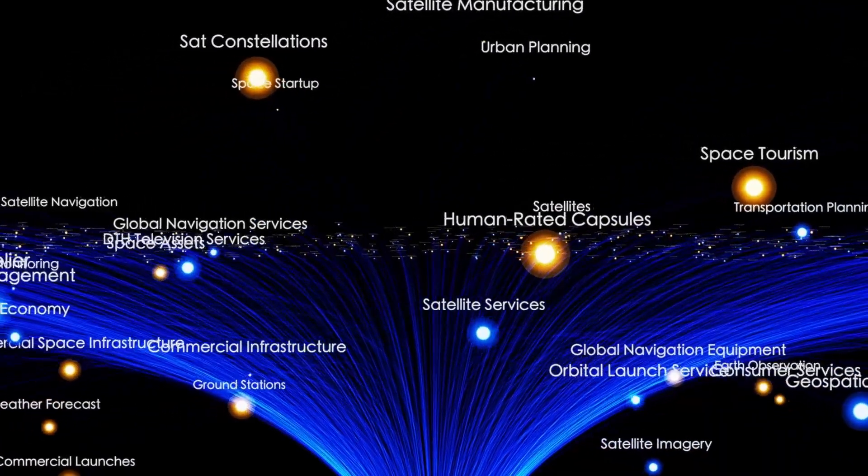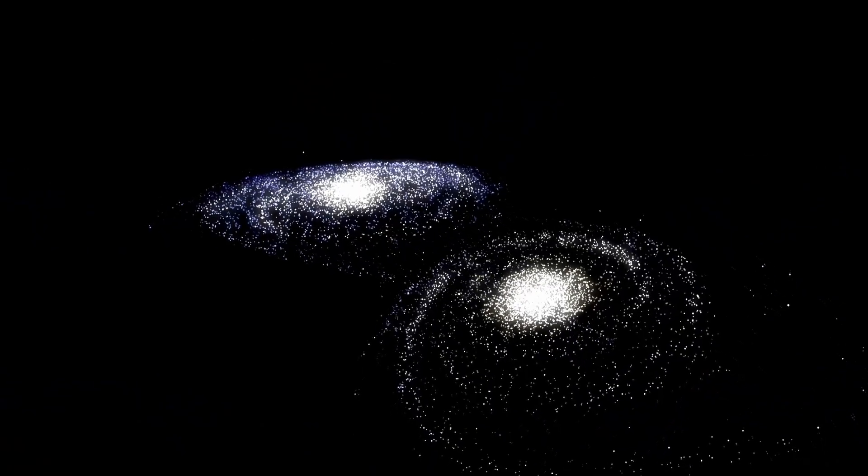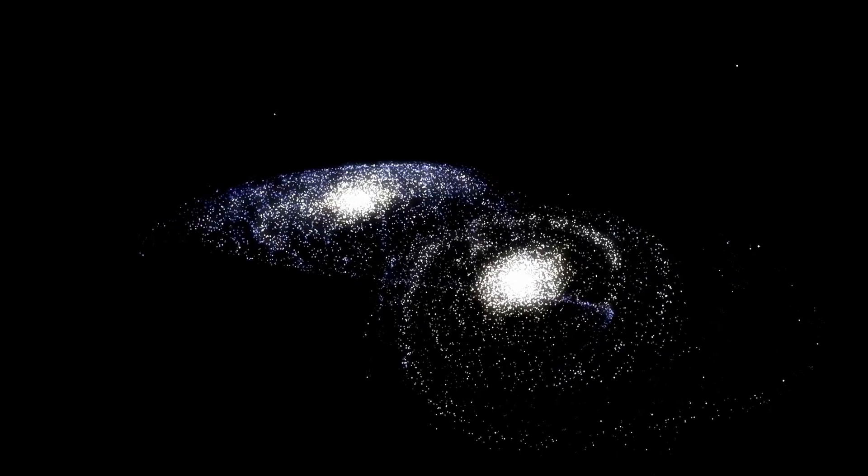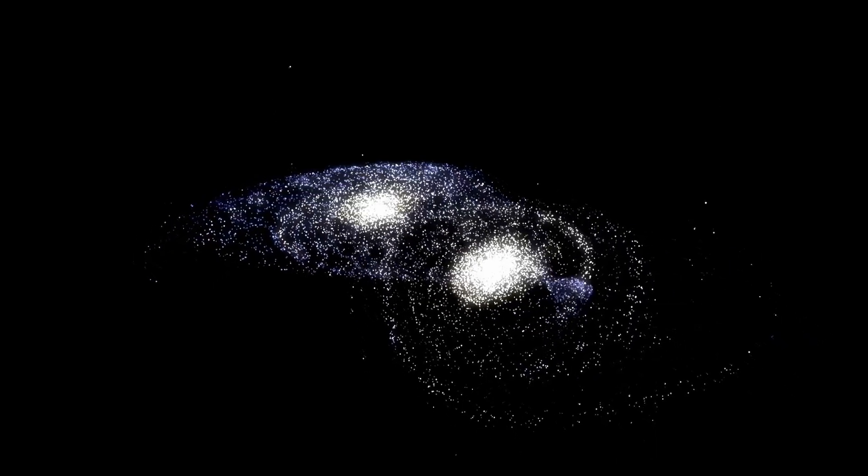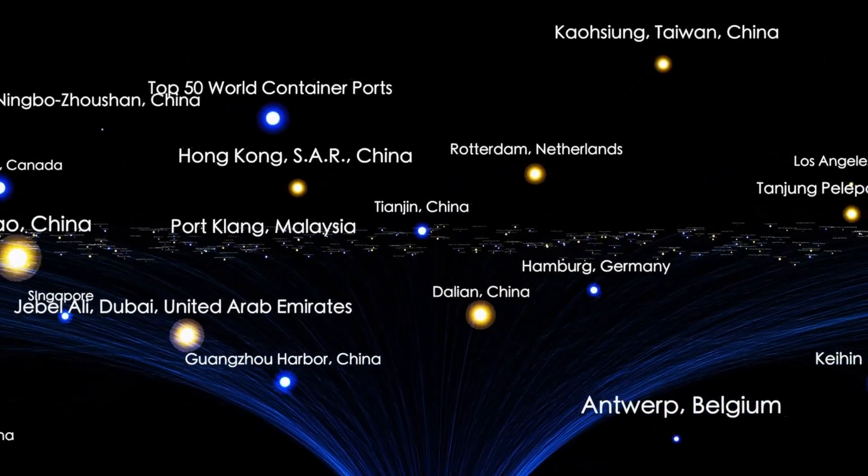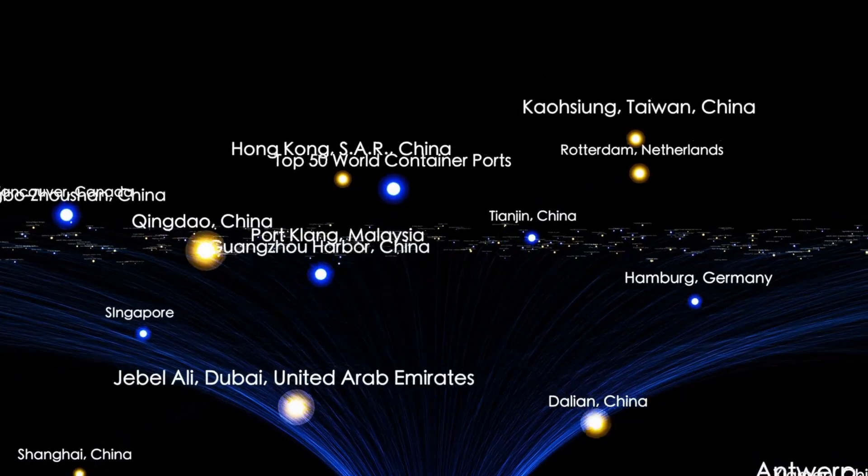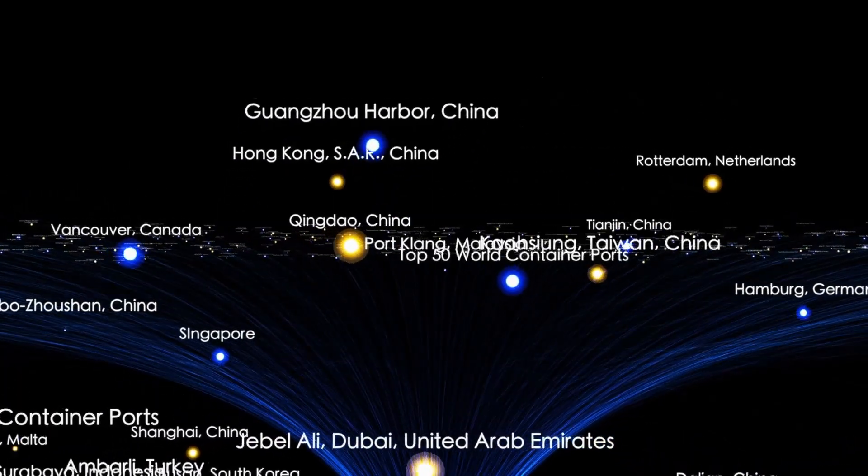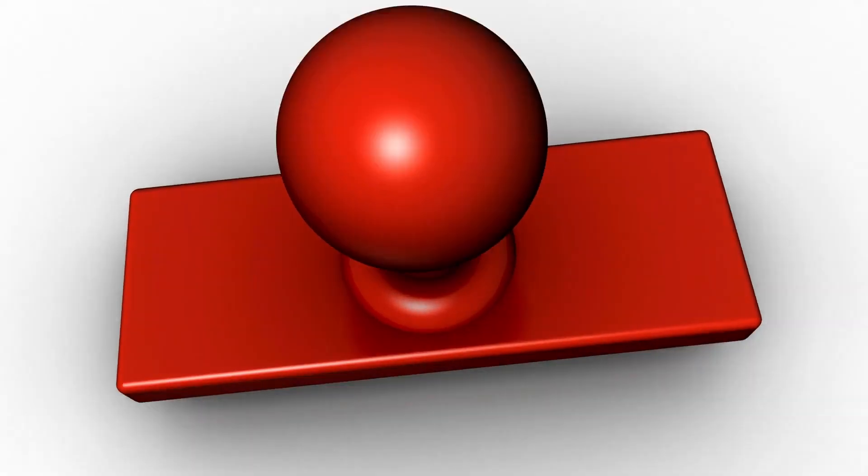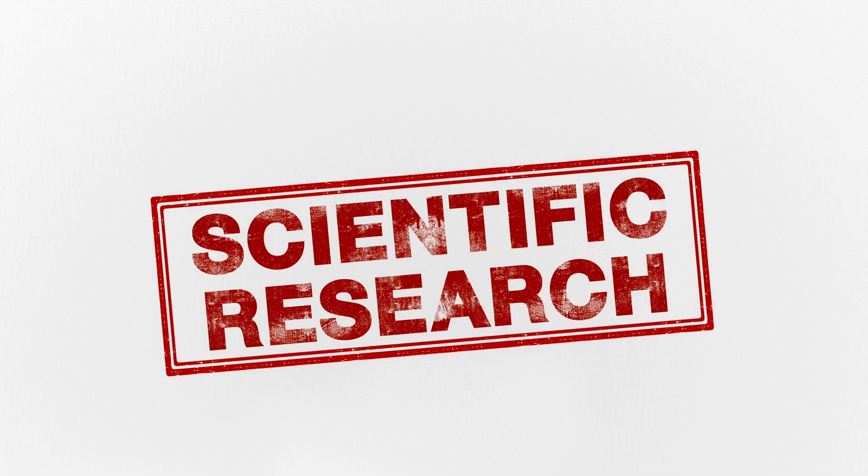The world of science went from awe to confusion, and from confusion to fear. Because if 3i Atlas isn't a rock, then what is it? When researchers first spotted 3i Atlas from a Chilean survey telescope on July 1st, 2025, it was already moving at blistering speed. At first glance, it seemed like a rare but welcome guest, an interstellar object, only the third ever detected in our solar system.